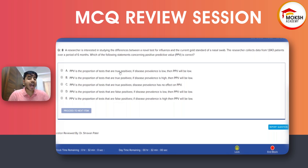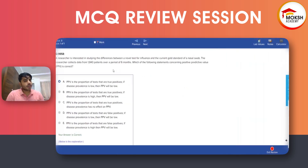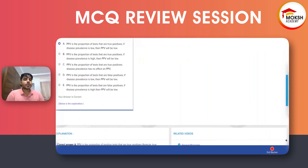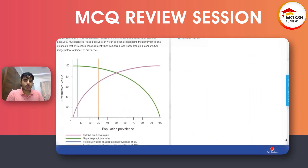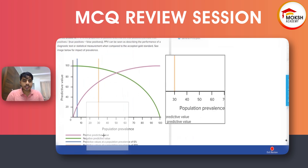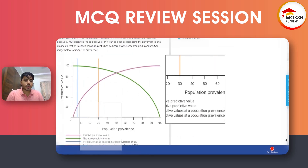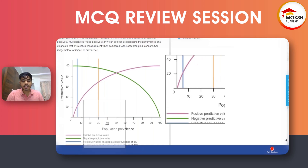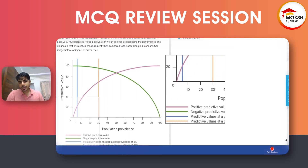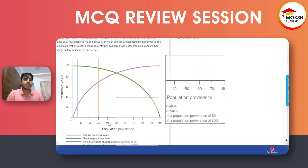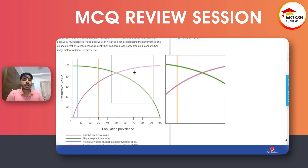Positive predictive value is the rate of true positives, and it is directly proportional to the prevalence. So as population prevalence increases, the positive predictive value also increases. On the graph, the purple color representing PPV increases along with population prevalence on the x-axis — they are directly proportional.